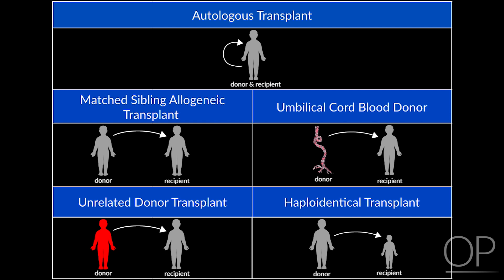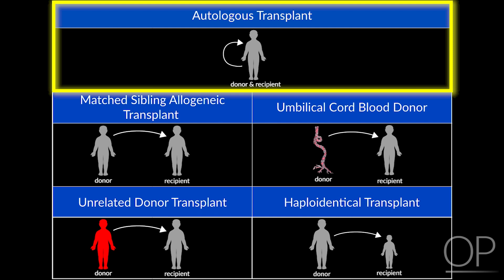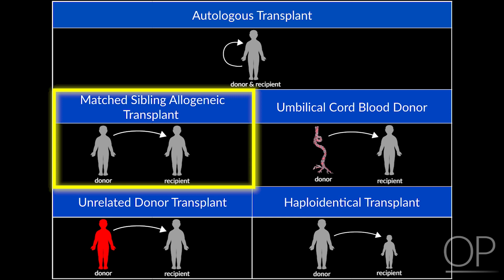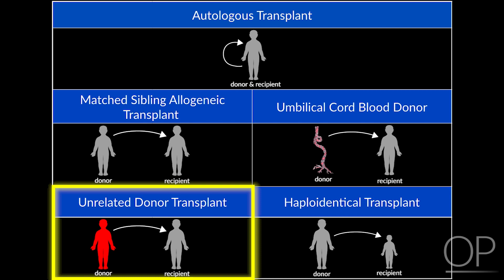Starting with the type of transplant and how that impacts immune reconstitution and risk of infections: transplanters divide transplant into autologous transplants, where you get your own cells back; matched sibling allogeneic transplants, where allogeneic means the transplant comes from someone else; and unrelated donor transplants, which can be matched or mismatched on the HLA loci we know are most important.